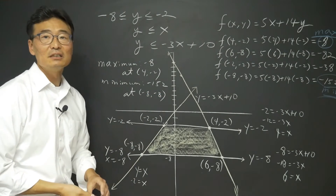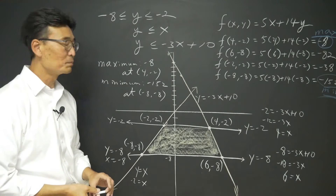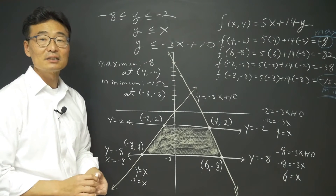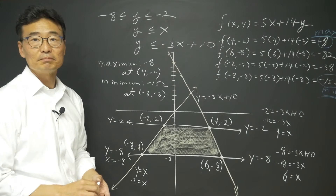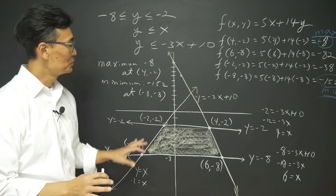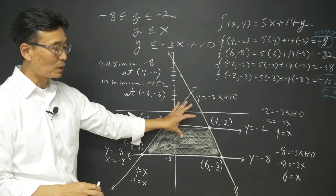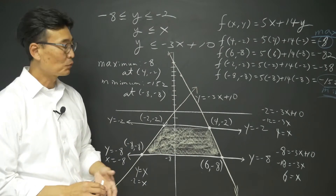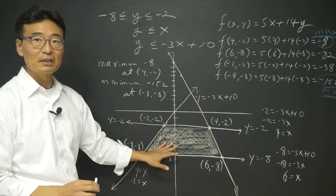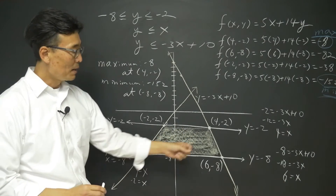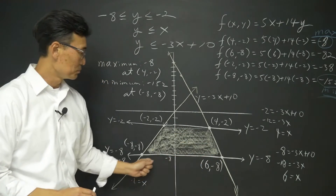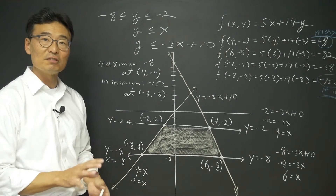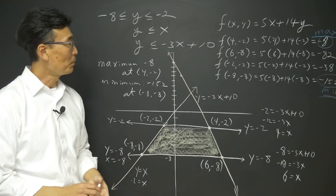As you can see, linear programming is quite a bit of work. The good thing is that it's quite useful in real life. The key to doing this correctly is to draw the graphs correctly, taking your time. Getting the correct coordinates of the vertices of the shaded region is the most important part of the problem.